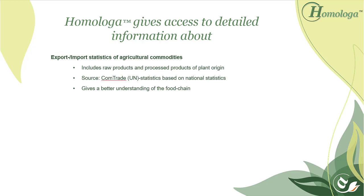The export and import statistics of agricultural commodities include raw products and processed products of plant origin. This data is from the Comtrade UN statistics based on national statistics, and it gives you a better understanding of the food chain.